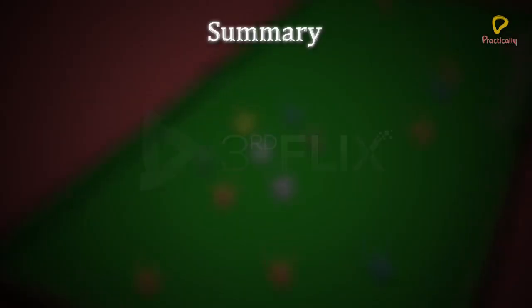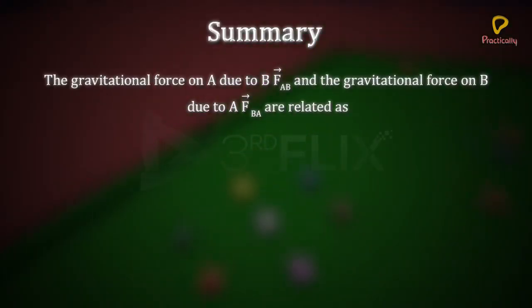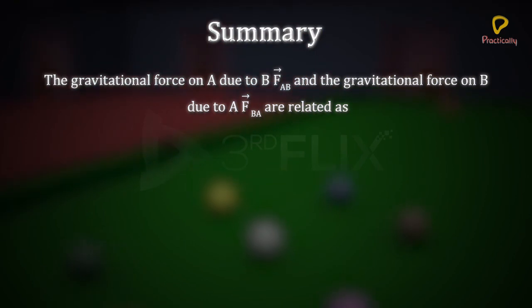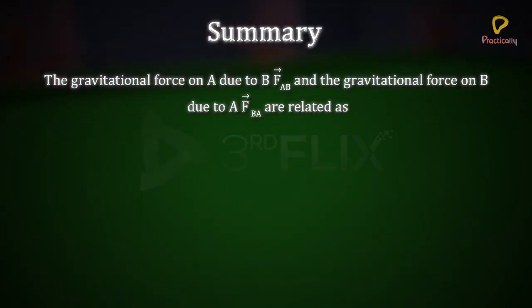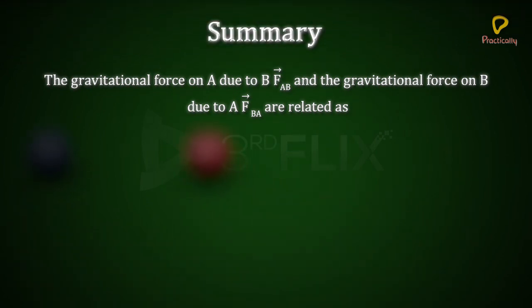Summary: The gravitational force on A due to B, f AB bar, and the gravitational force on B due to A, f BA bar, are related as f AB bar equals to minus f BA bar, and magnitude of f AB bar equals to the magnitude of f BA bar.